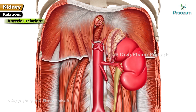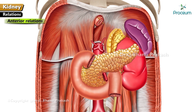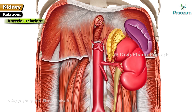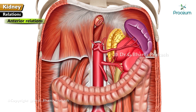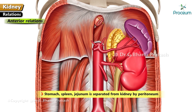Anterior relations of the left kidney: left suprarenal gland, spleen, stomach, pancreas, splenic vessels, splenic flexure of colon, and jejunum. Jejunum is separated from the kidney by peritoneum.